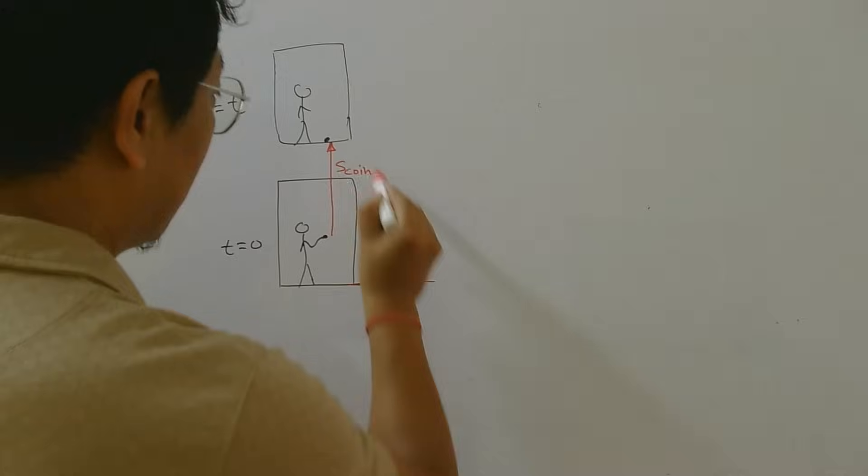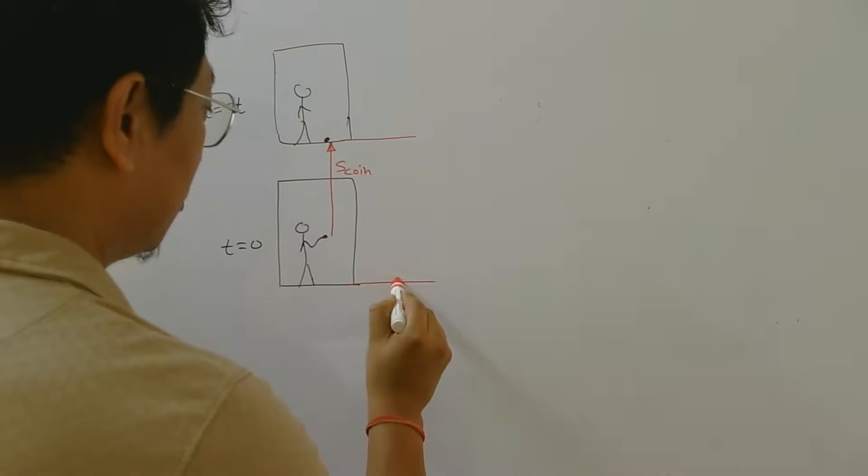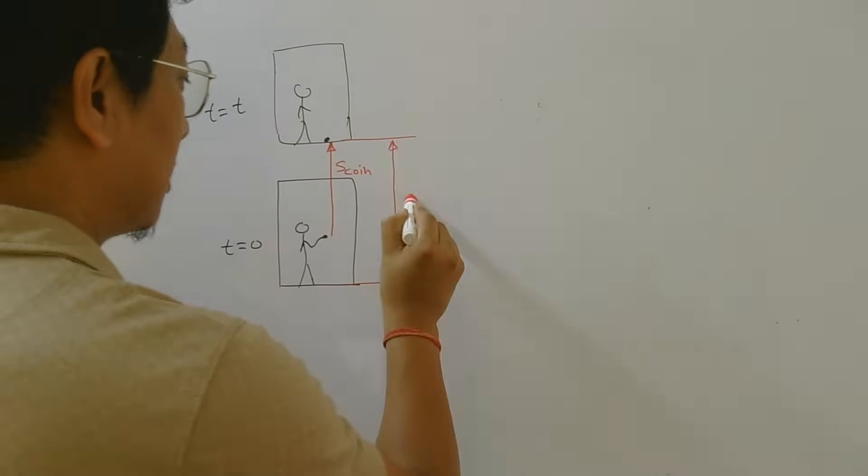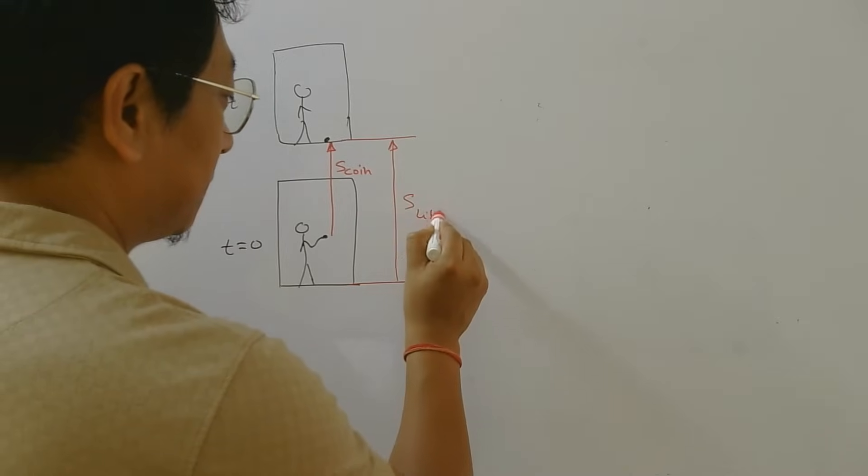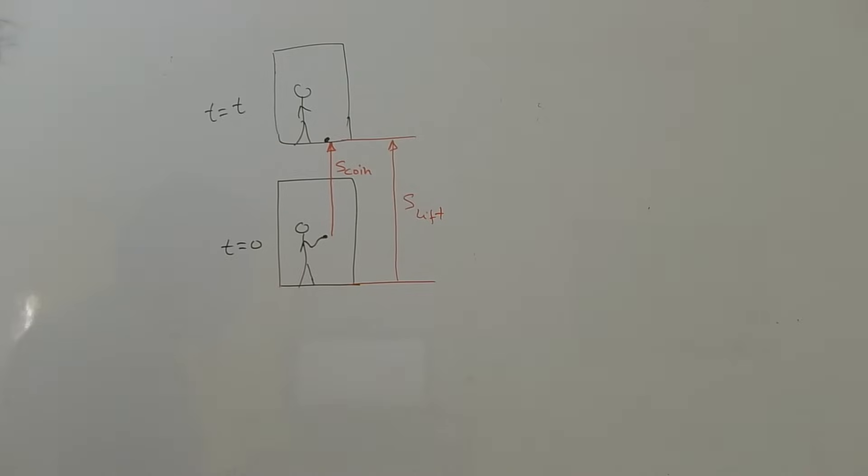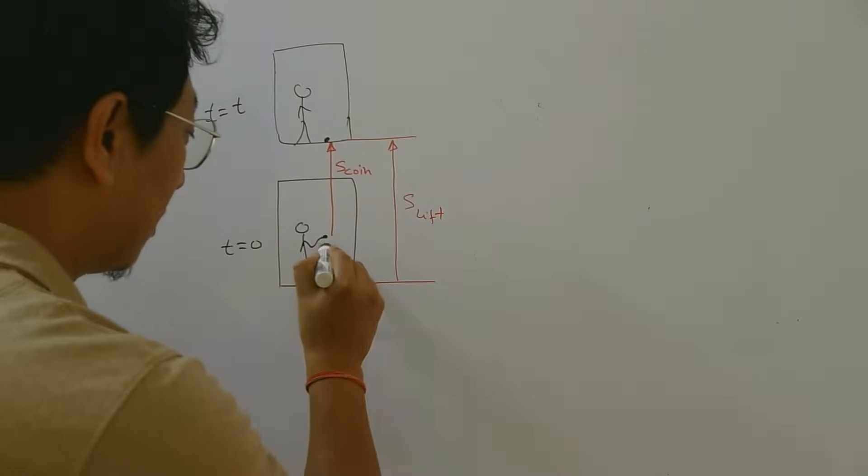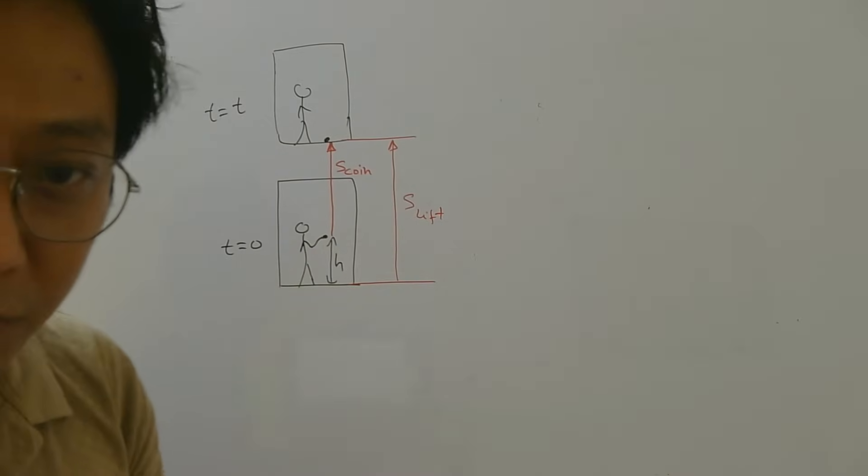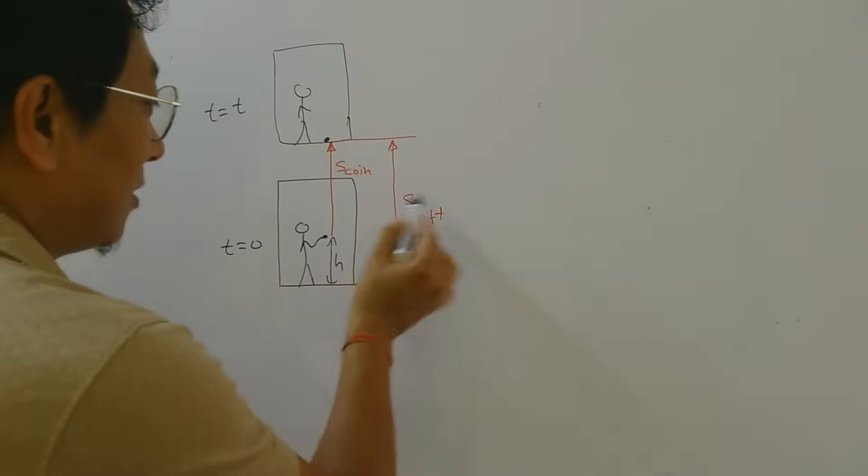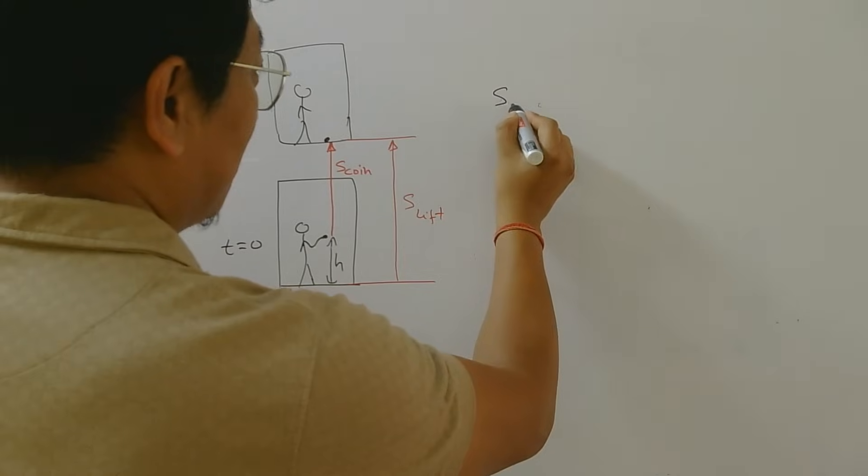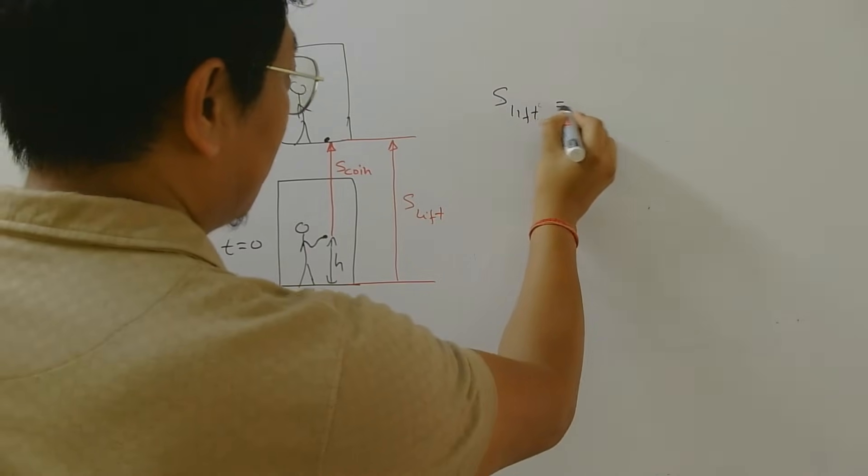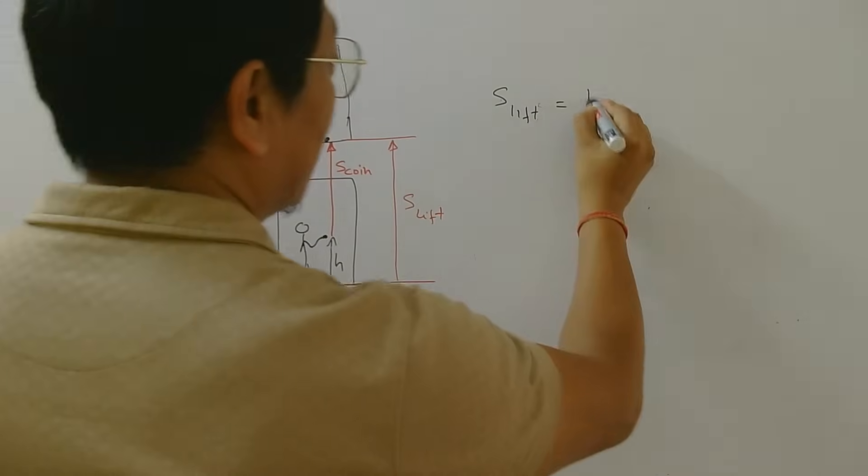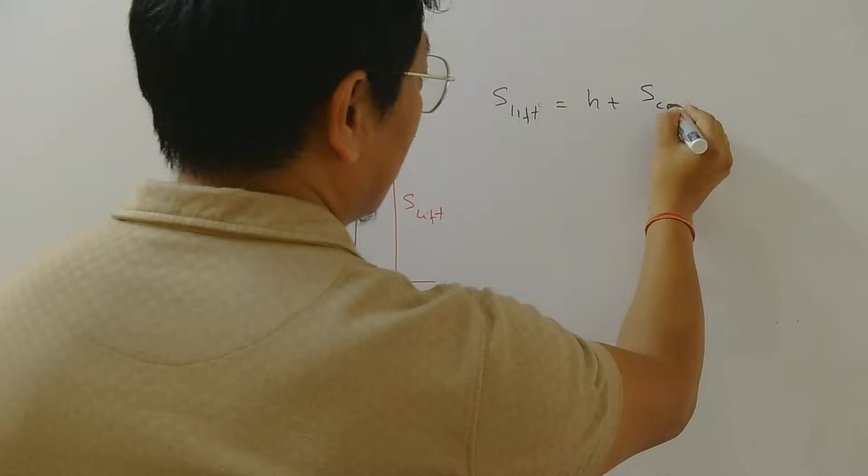So this bottom part of the lift has moved some distance which is the displacement of the lift and this was the height from where the person dropped the ball, right, from the floor of the lift. So now how will you connect these displacements? So s of the lift must be this height plus s of the coin.